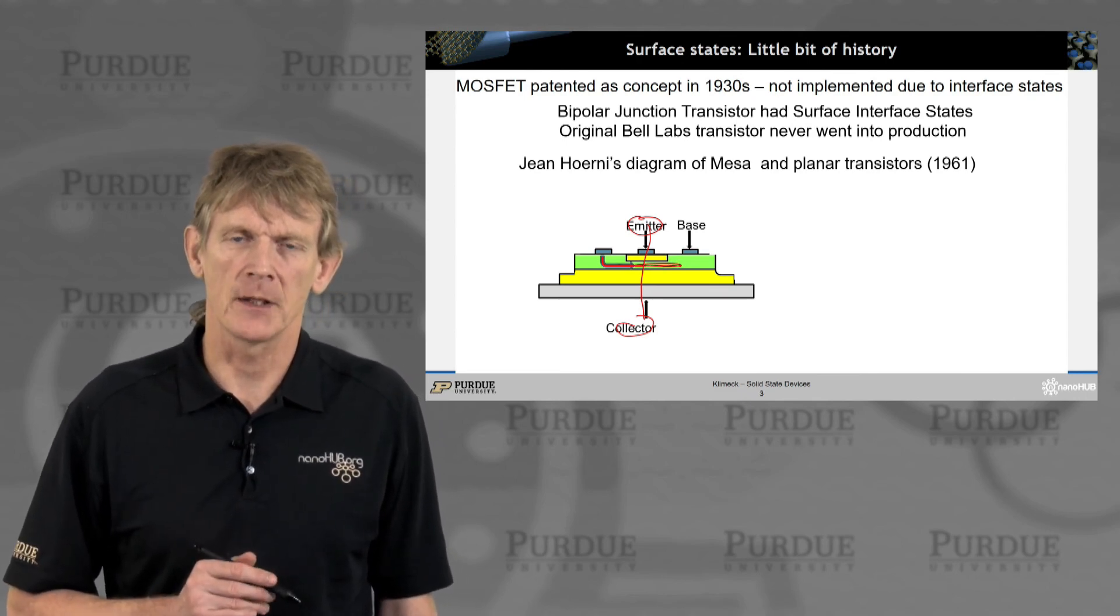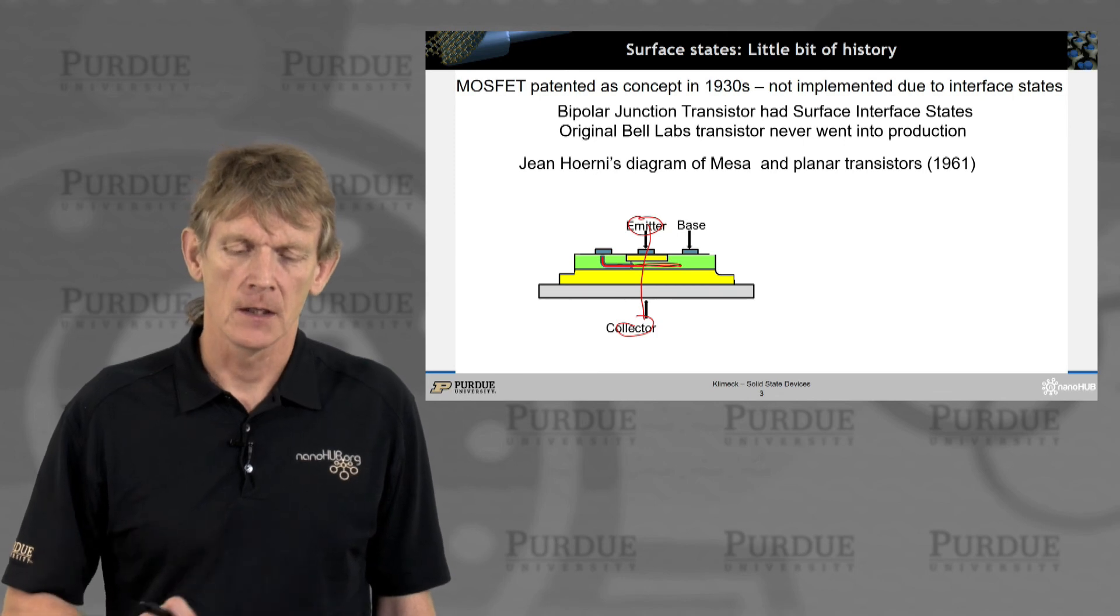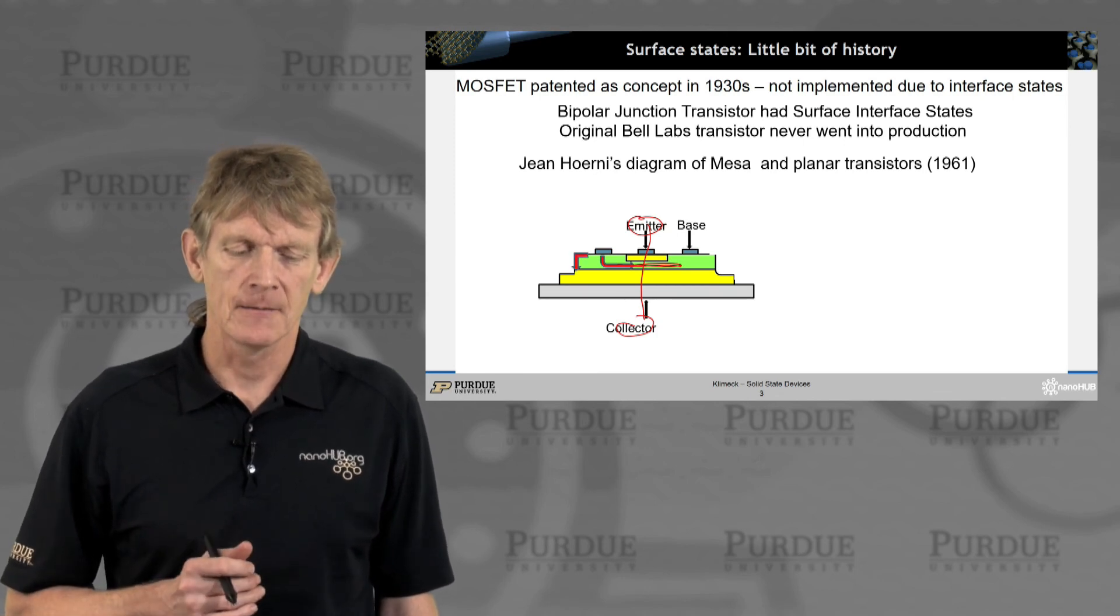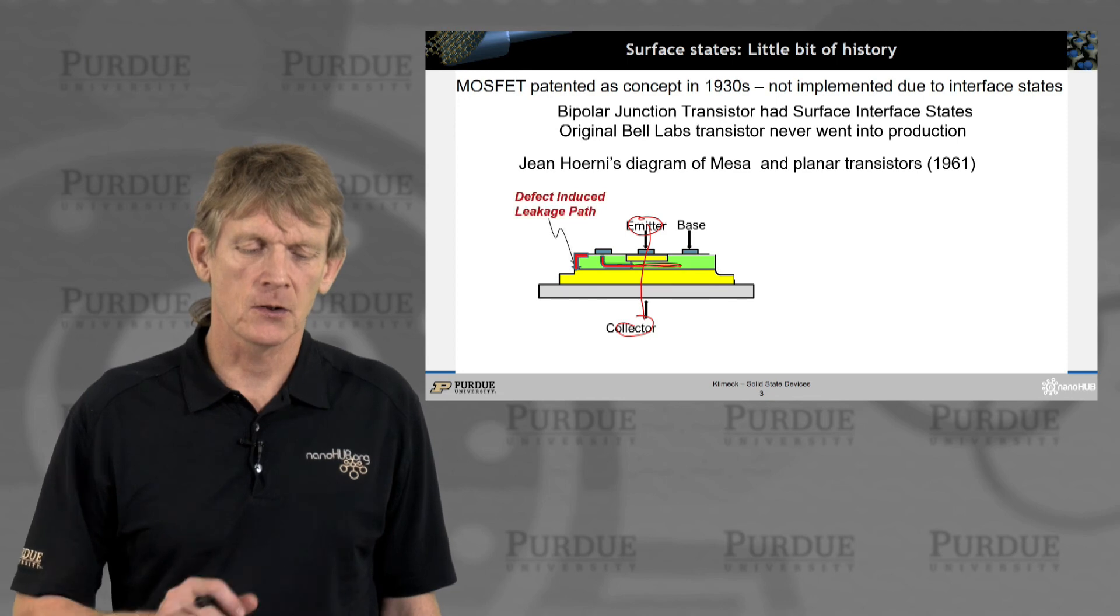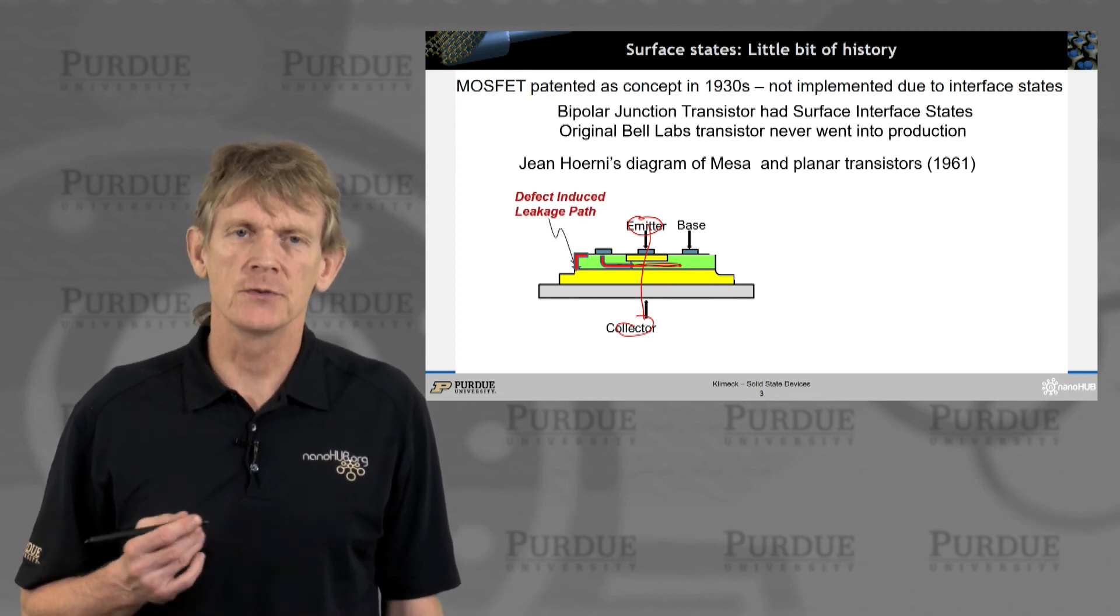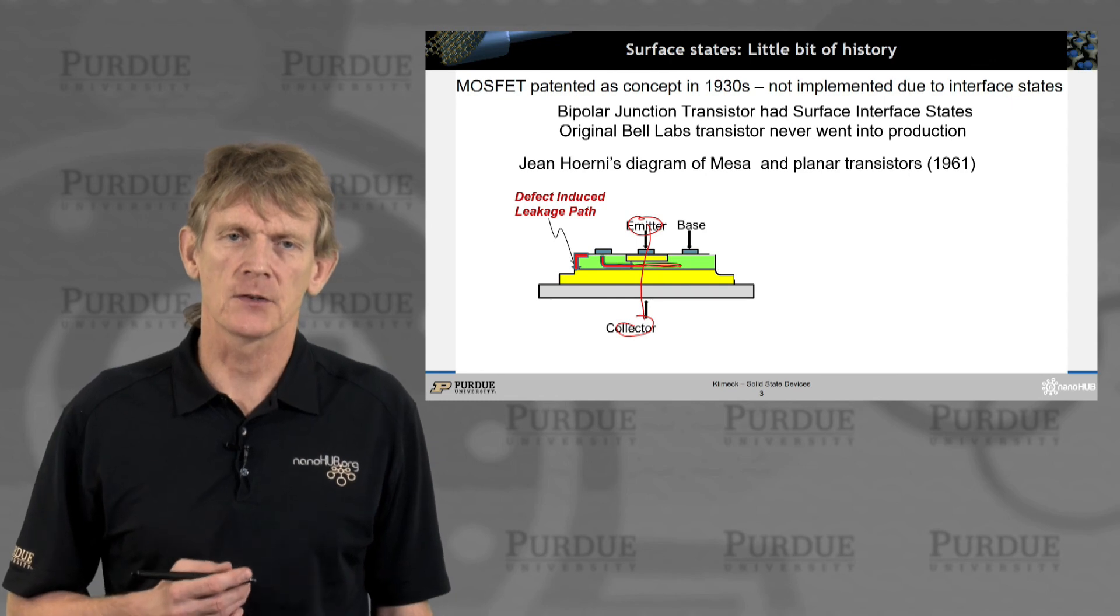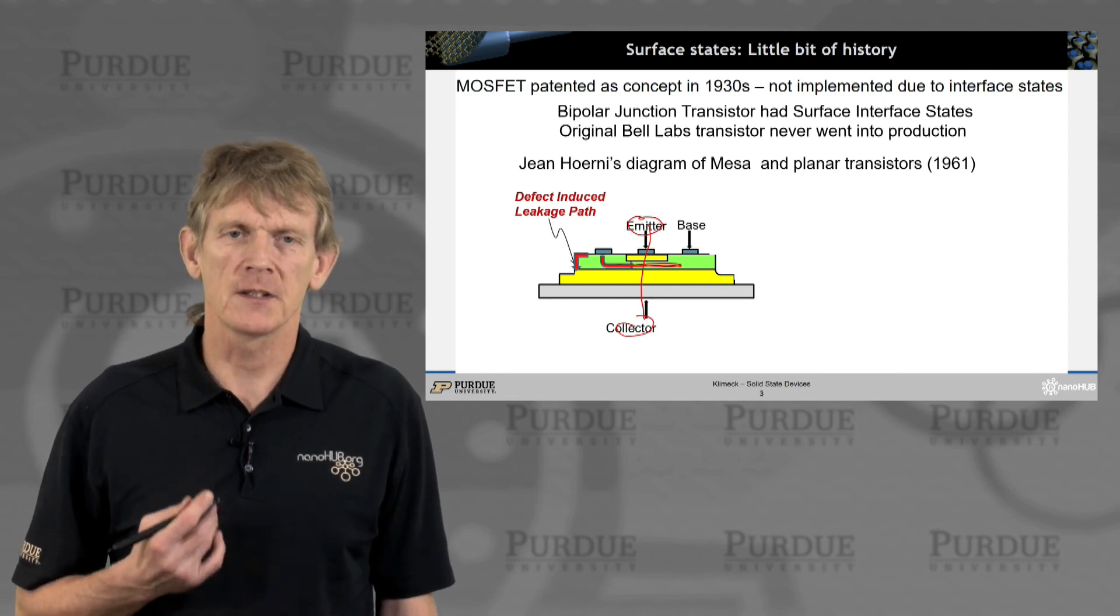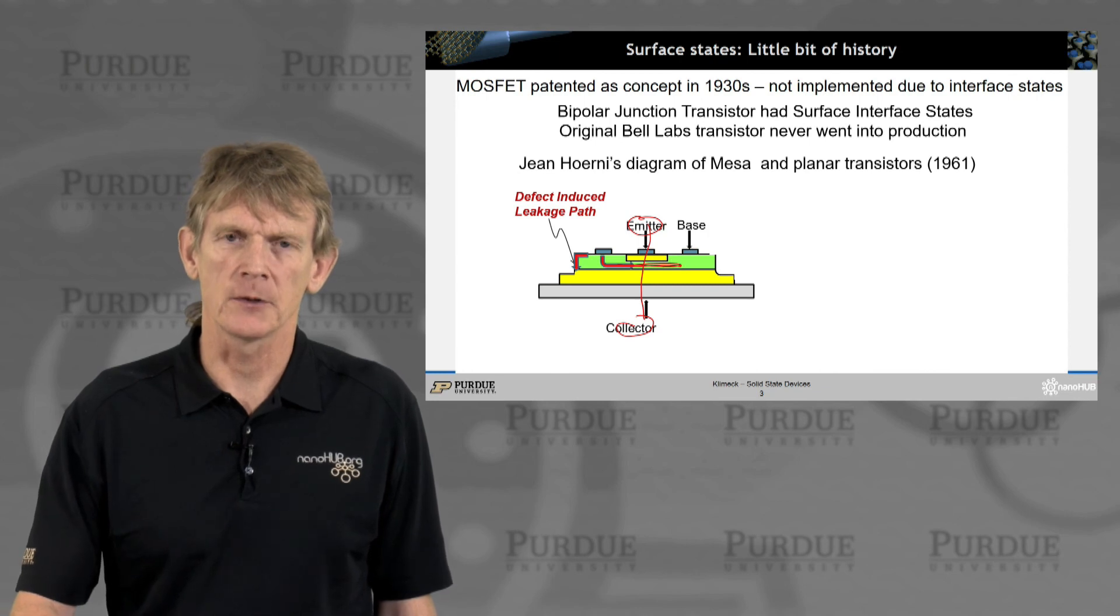The base is controlling the overall flow. That is the gate in the bipolar transistor. What was happening, though, is that there's other flow from the base into the collector through some leakage path. That was due to defects, surface defects, surface states.